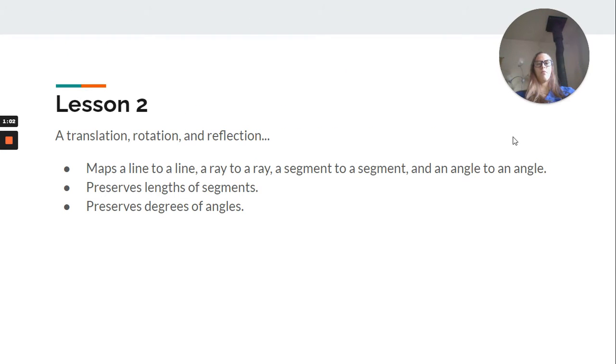Lesson 2 was just the basic properties. We only looked at translation, but rotation and reflection have the exact same properties. So, a translation, rotation, and reflection maps a line to a line, a ray to a ray, a segment to a segment, and an angle to an angle, preserves the lengths of the segments, preserves the degrees of the angles. So, stay the same length. Angles, measures are the same, too.